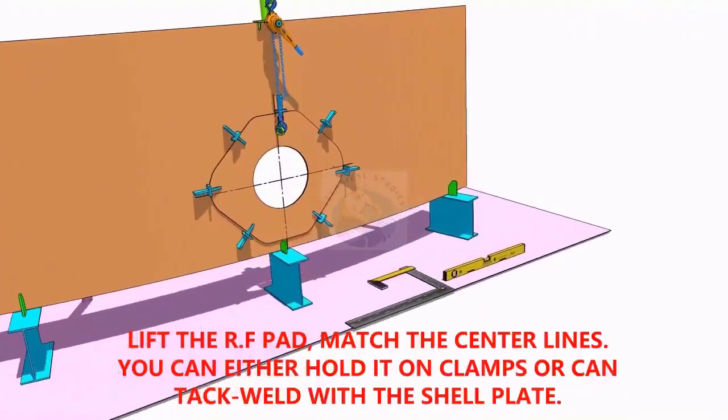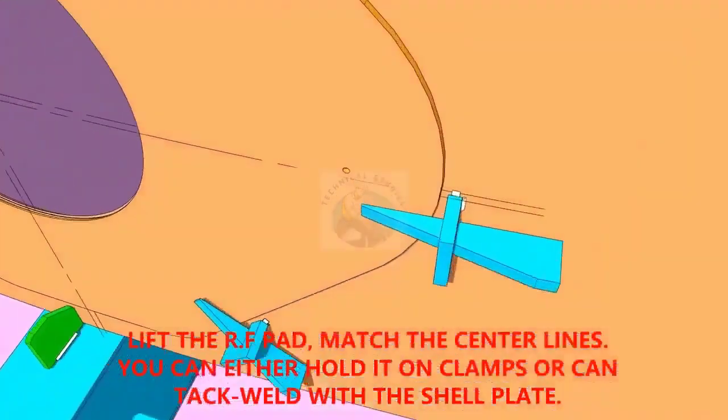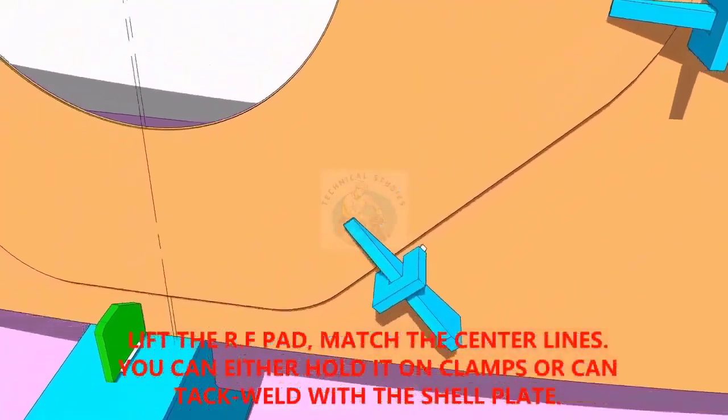TAC weld the reinforcement pad on the shell plate. You can either TAC weld directly on the shell or fix it with clamps as shown.